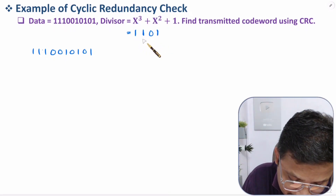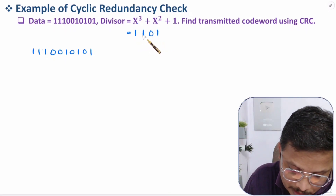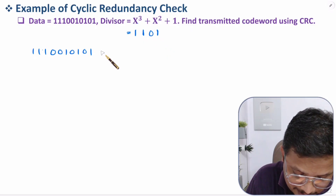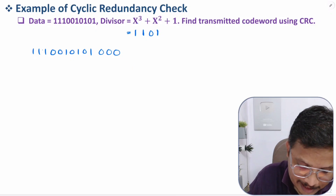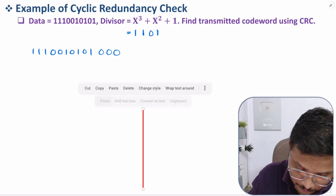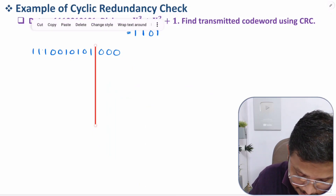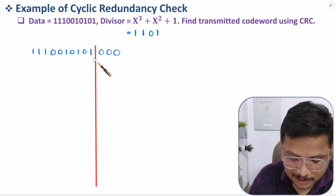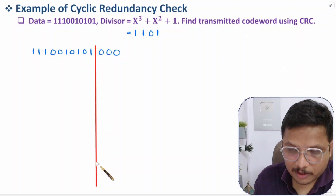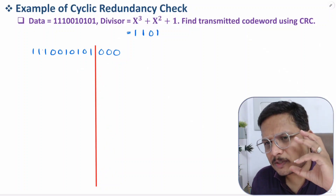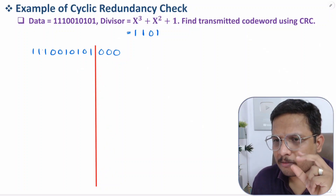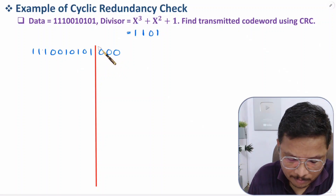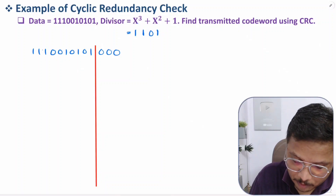The divisor has 4 bits (1 2 3 4), so we need to append 3 redundancy bits: 0 0 0. Do not forget to draw a line here. Students often make mistakes in calculation because they don't draw a straight line — confusing data can lead to false answers. Practice carefully as I am explaining.